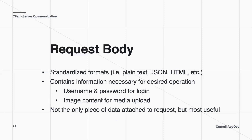For the request body, there are standardized forms of data. In this class, we're going to be using JSON format. The request body contains information necessary for the desired operation — for example, if you're logging into Instagram, the request body is going to be the username and the password. If you want to post something on Instagram, it's going to be the image content for that media upload. The request body is the main carrier for the data you're trying to deal with.